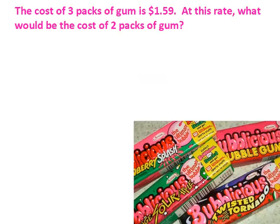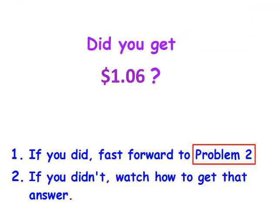Here's the first one. The cost of three packs of gum is $1.59. At this rate, what would be the cost of two packs of gum? Go ahead and pause your video now. Did you get $1.06? If you did, go to problem two. But if you didn't, watch and see how to solve it.